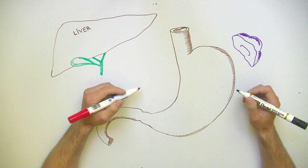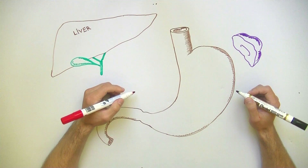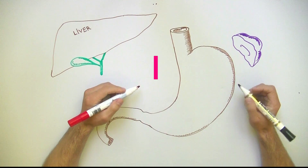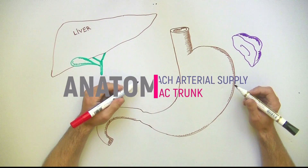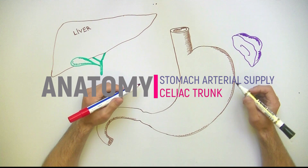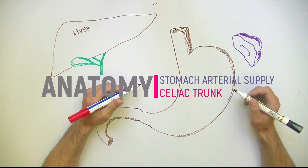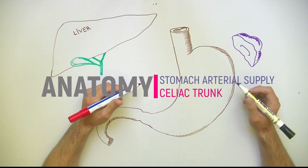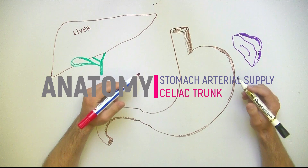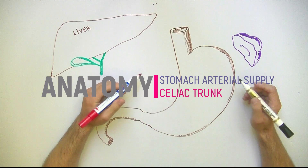We'll discuss today about the stomach arterial supply. The stomach has rich arterial supply derived from the celiac trunk and its branches.